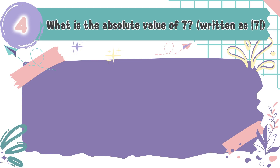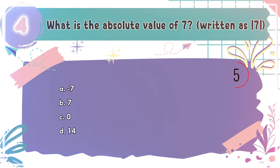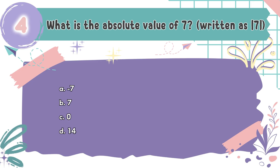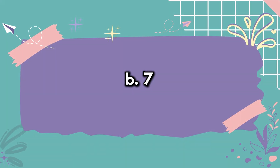Question number 4: What is the absolute value of 7? The choices are A. Negative 7, B. 7, C. Zero, D. 14. The correct answer is B. 7. The absolute value is a number's distance from 0 — 7 is 7 steps away from 0.